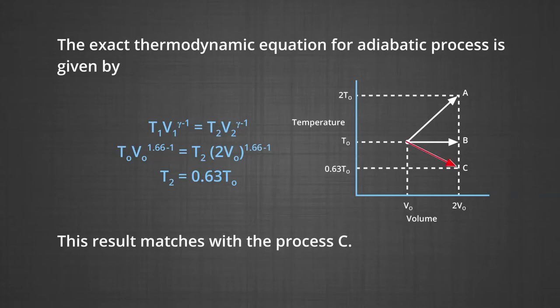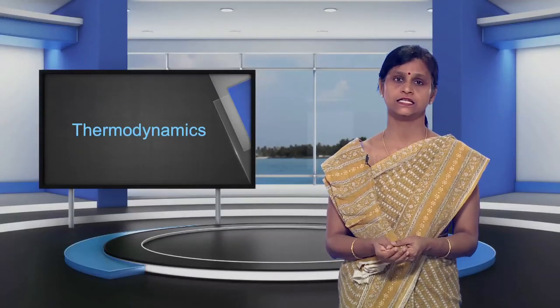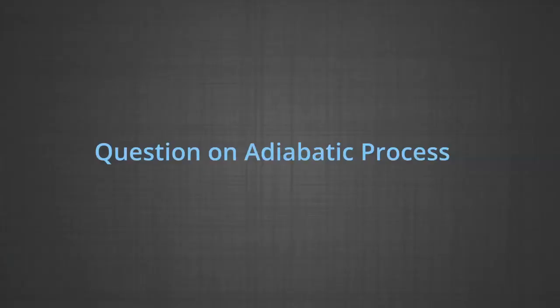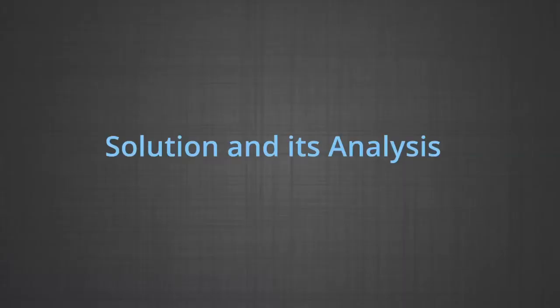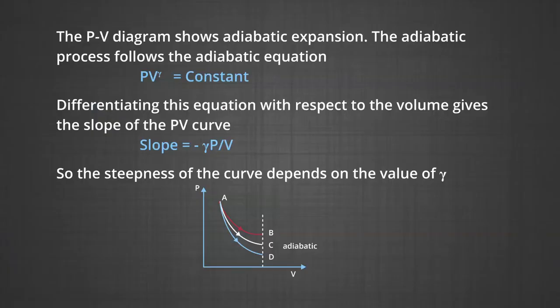The next question is based on adiabatic processes. The figure shows adiabatic processes for equal moles of three gases. We must name one possible gas for each of the three processes. The PV diagram shows adiabatic expansion. The adiabatic process follows the equation PV^γ = constant.